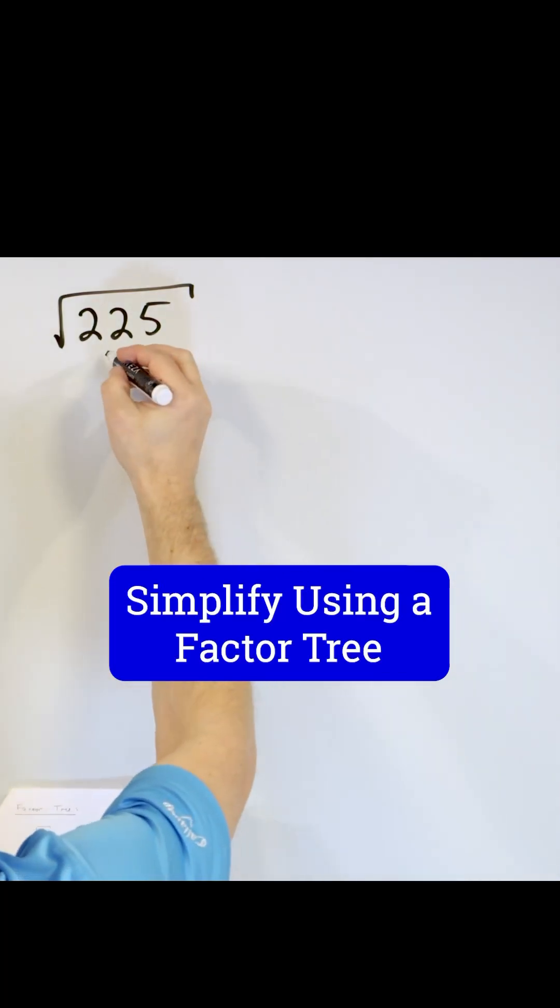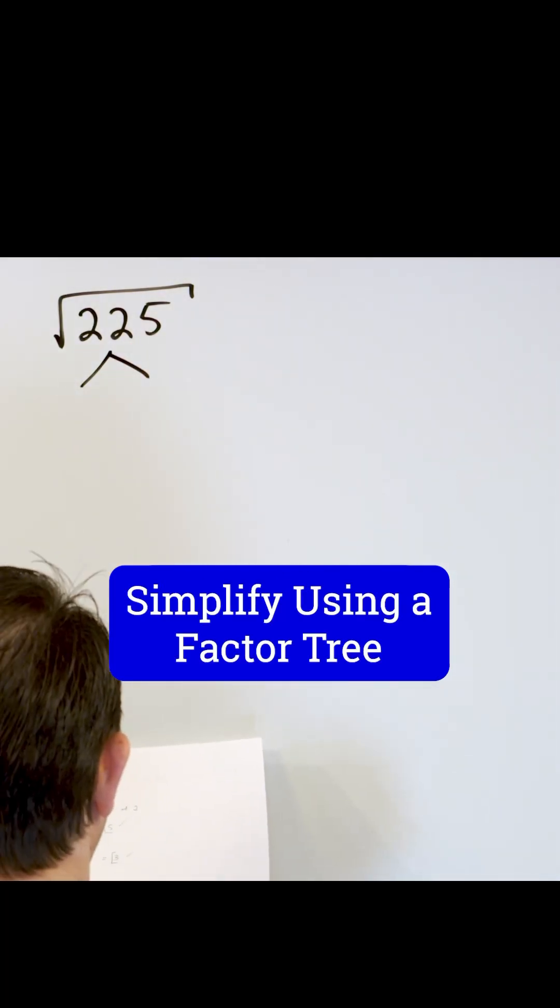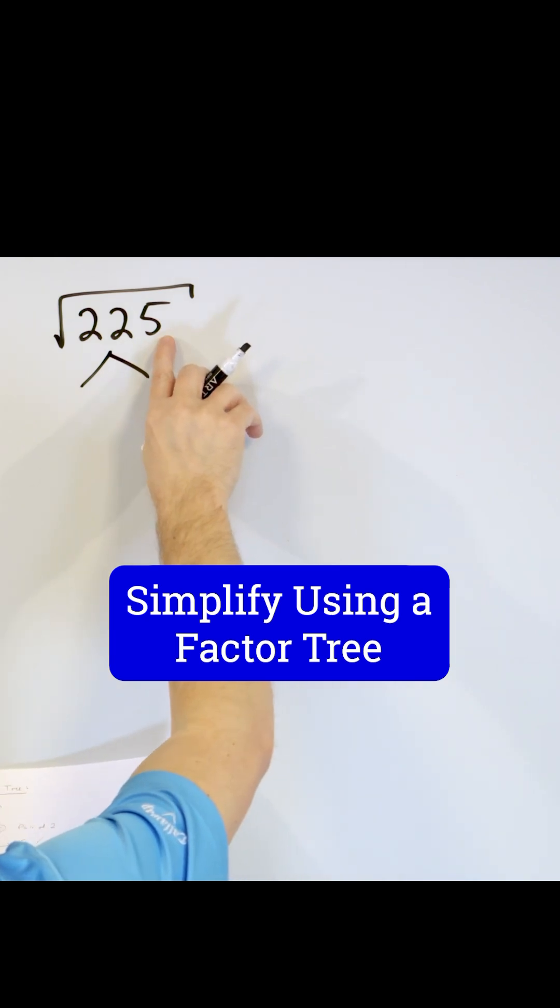What times what will give me 225? Anything times anything will give me 225. So I know it's divisible by five, because there's a five here.